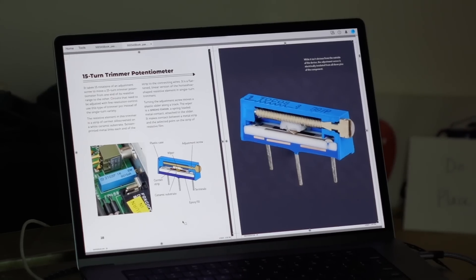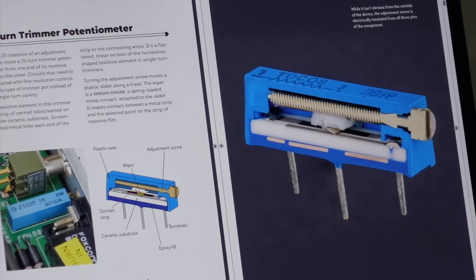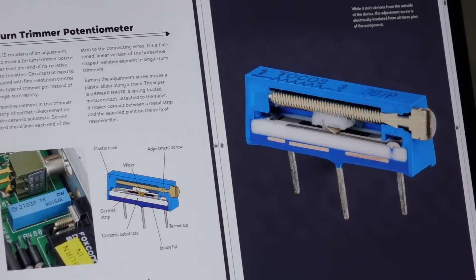This is a 15 turn trimmer potentiometer. How the freaking hell did you cut through that without breaking it? Very slowly with sandpaper. Sandpaper too.